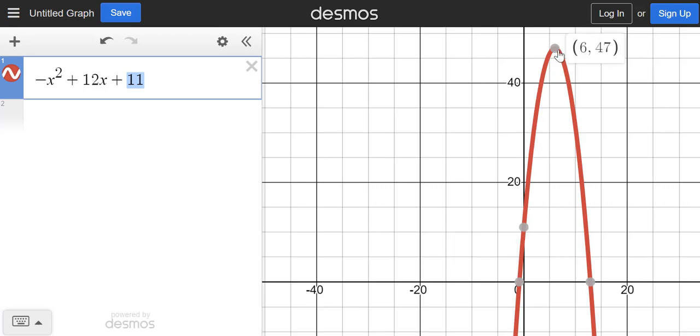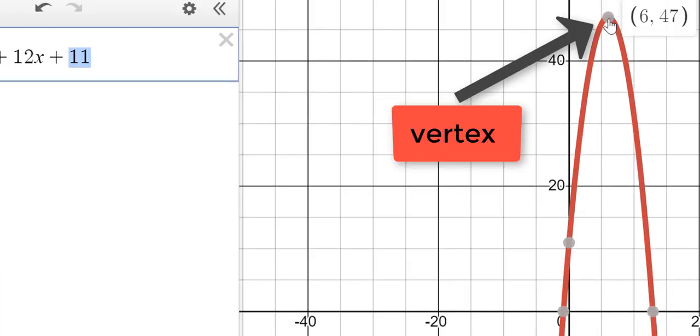Now all the way up here at the very tippy-top, you'll see the coordinates for the vertex. And the coordinates of this vertex are (6, 47).